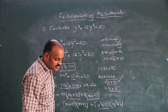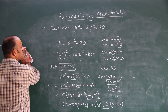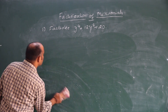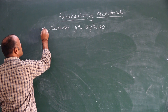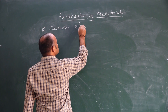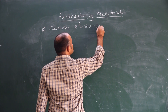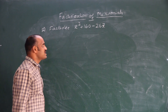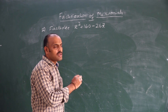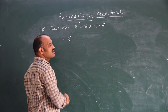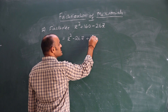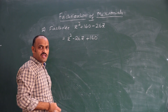Hope you understand this question. Let's see one more. Factorize z² + 116 − 26z. First we need to write it in order: z² − 26z + 116. It is already a quadratic expression, so no need to use any other variable.